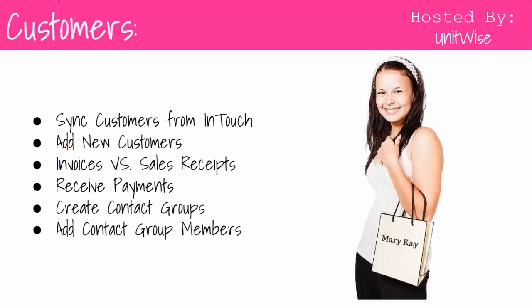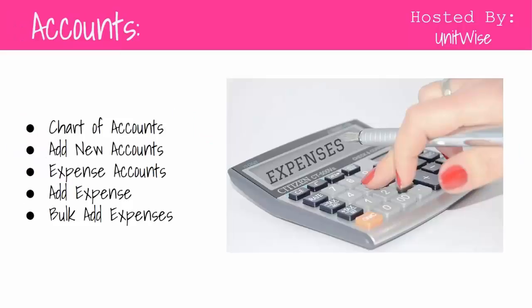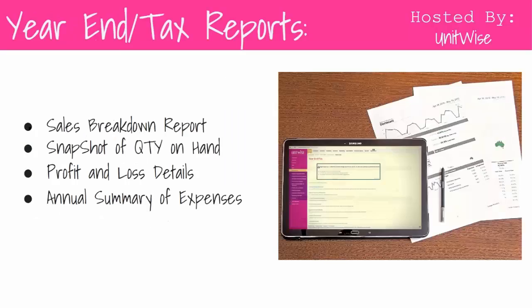Within the customer section, we'll cover how to sync customers from InTouch, adding new customers, the difference between invoices and sales receipts, receiving payments, contact groups, and how to add contact members. In the inventory portion, we'll go over how to search products, add products, bulk edit, and import purchase orders. In the account section, we'll cover chart of accounts, how to add new accounts, expense accounts, adding expenses, and bulk add expenses. In the report section, the most important is the year-end tax report. We'll go over the sales breakdown report, snapshot of quantity on hand, profit and loss details, as well as annual summary of expenses.